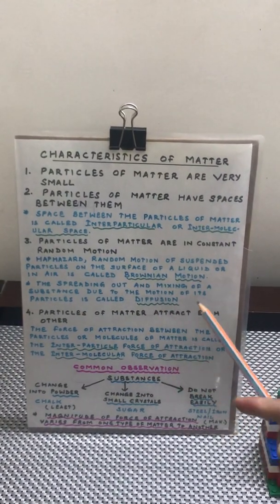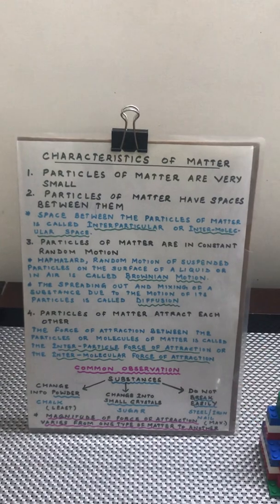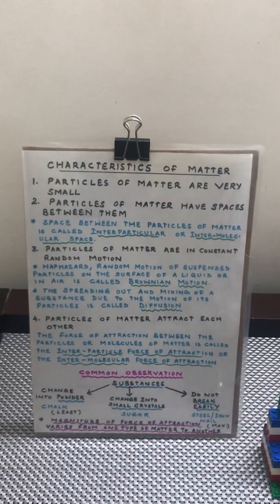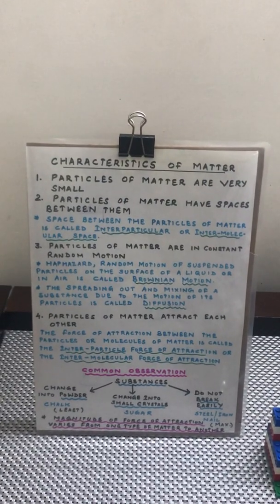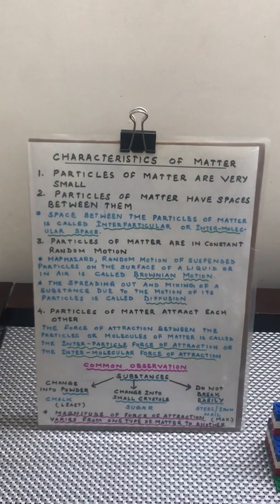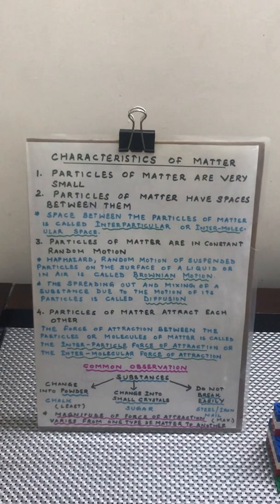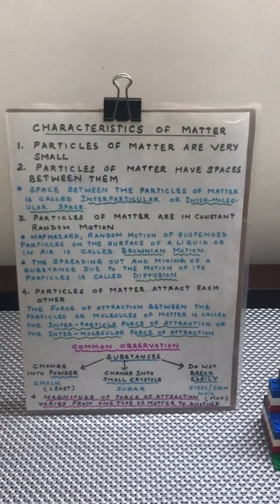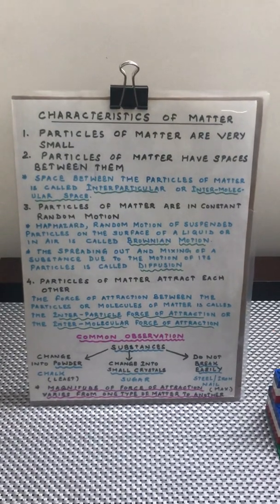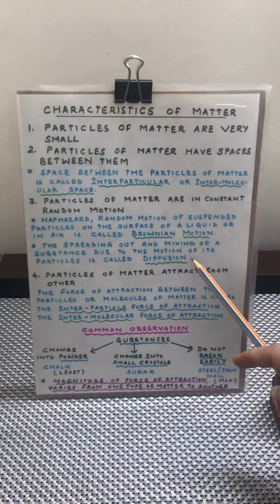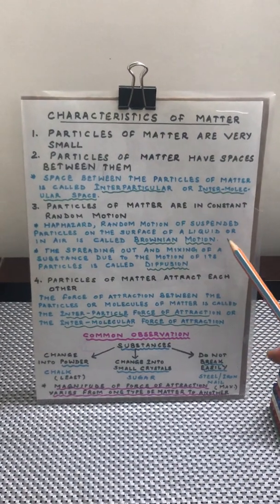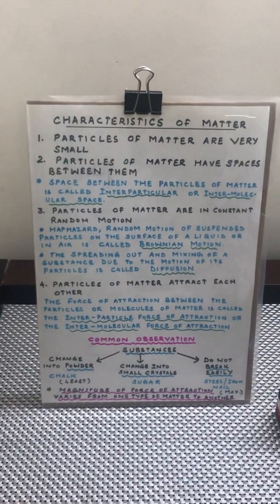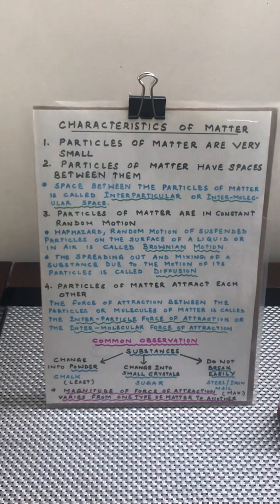This phenomenon is very commonly seen when your mother is cooking food in the kitchen and you are sitting in your room and you get the smell of the food right in your room. It is because of this phenomenon which is known as diffusion. Another example could be if your father or mother has applied some perfume or scent,